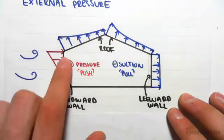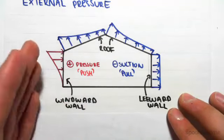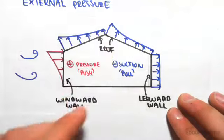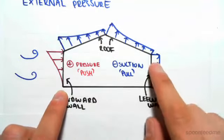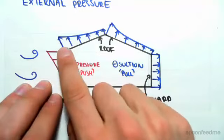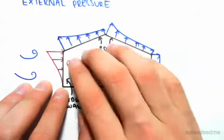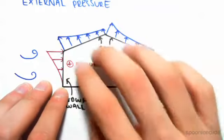Now it induces a positive pressure on the windward wall, and when we think of this as a push, it's going to try and push this wall down. Everywhere else it's creating a suction, which is a pull. So as the wind will flow over this roof, it's going to cause the roof to be in suction, causing the roof to try to pull up off the house.